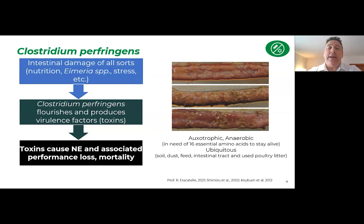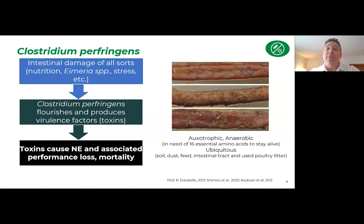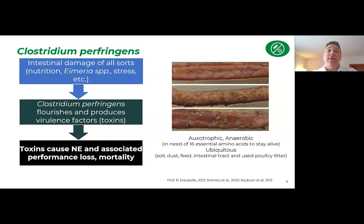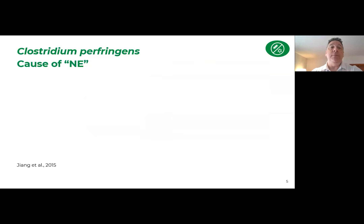A couple of interesting factors about Clostridium perfringens: one is it's auxotrophic, which essentially means it needs 16 essential amino acids in order to reproduce and survive, because it can't synthesize amino acids on its own — it needs to get those from its host. The other factor, besides being anaerobic, is that it's ubiquitous, meaning it's everywhere — in the soil, dust, feed, always present in the intestinal tract and litter. That doesn't mean it always causes issues, but if you have predisposing factors you can have challenges with both clinical and subclinical necrotic enteritis.